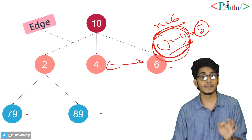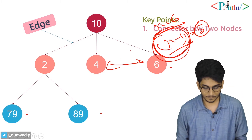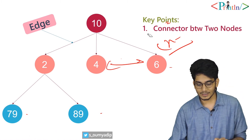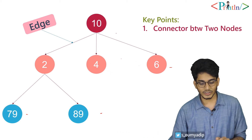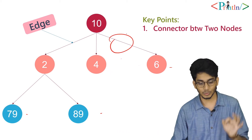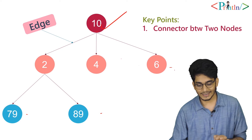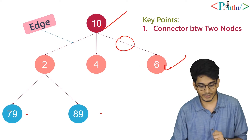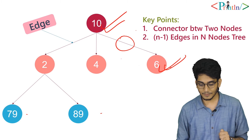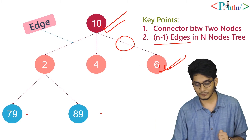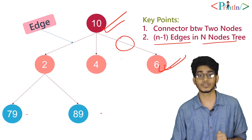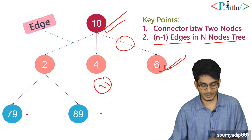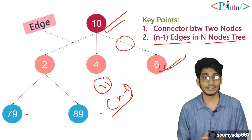If you add extra edges beyond n minus 1, it becomes a graph, not a tree. So we must ensure there are exactly n minus 1 edges. Key points: an edge is the connector between two nodes — for example, the edge between 10 and 6 — and an n-node tree has exactly n minus 1 edges.